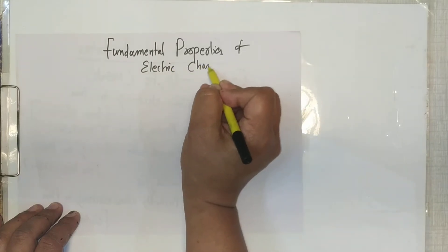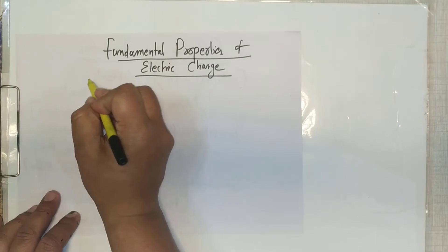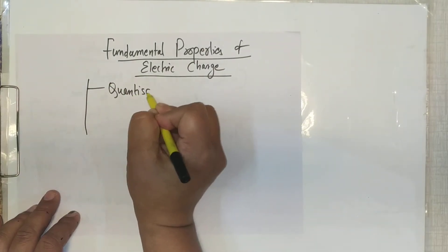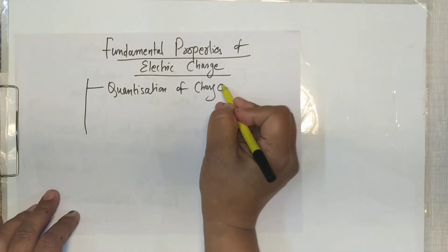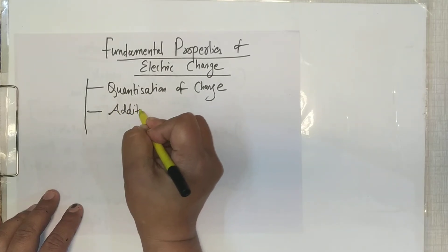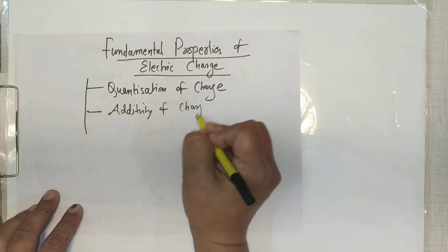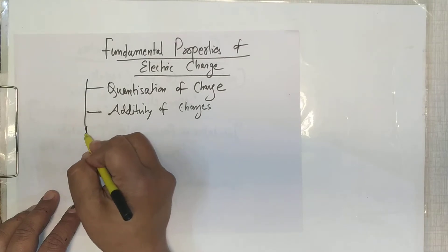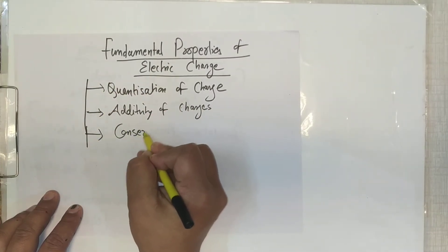There are three fundamental properties of electric charge. First is quantization of charge. Second is additivity of charges. Third is conservation of charge. These are the three fundamental properties of charges.